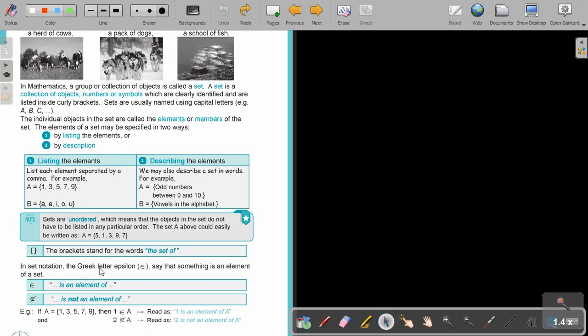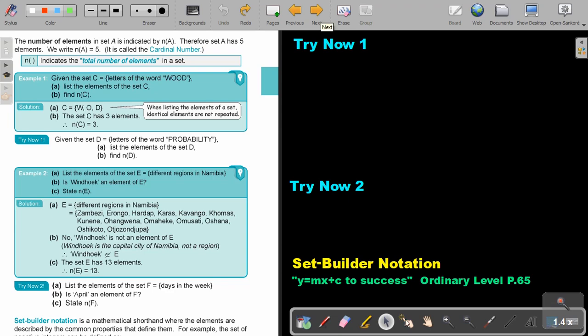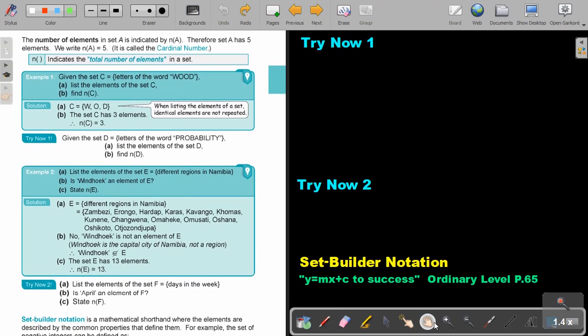In set notation, the Greek letter epsilon says that something is an element of a set. Is the element of. Or, if there's a stripe through, is not an element of. So, if A is this, then 1 is an element of A. Read as 1 is an element of A. And 2 is not an element of A.